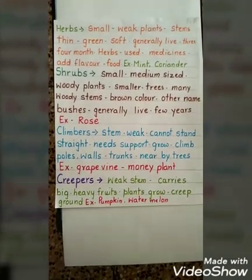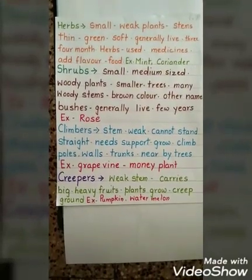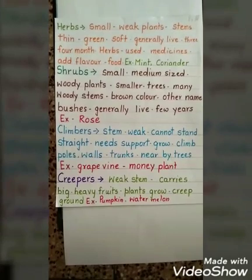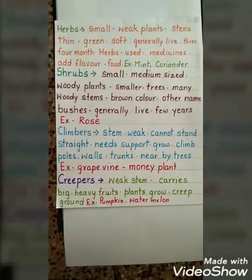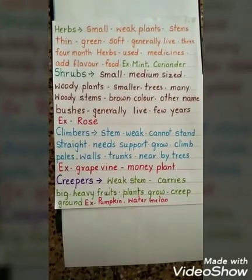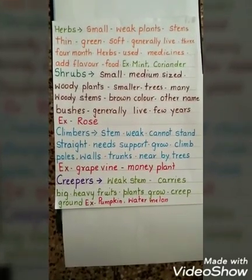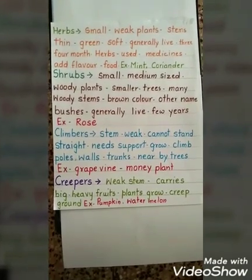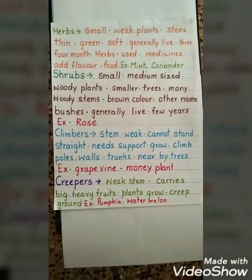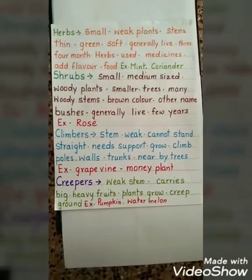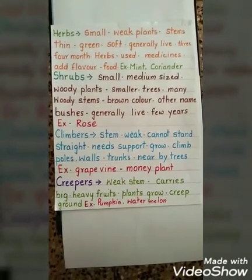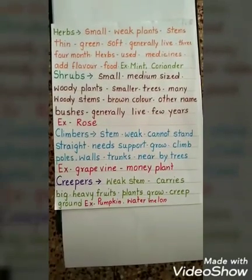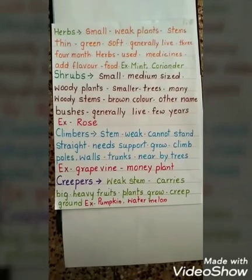Now we will move on to shrubs. Shrubs are small to medium-sized woody plants, but smaller than trees. They have many woody stems that are brown in color. Shrubs generally live for a few years. An example of a shrub is the rose plant.